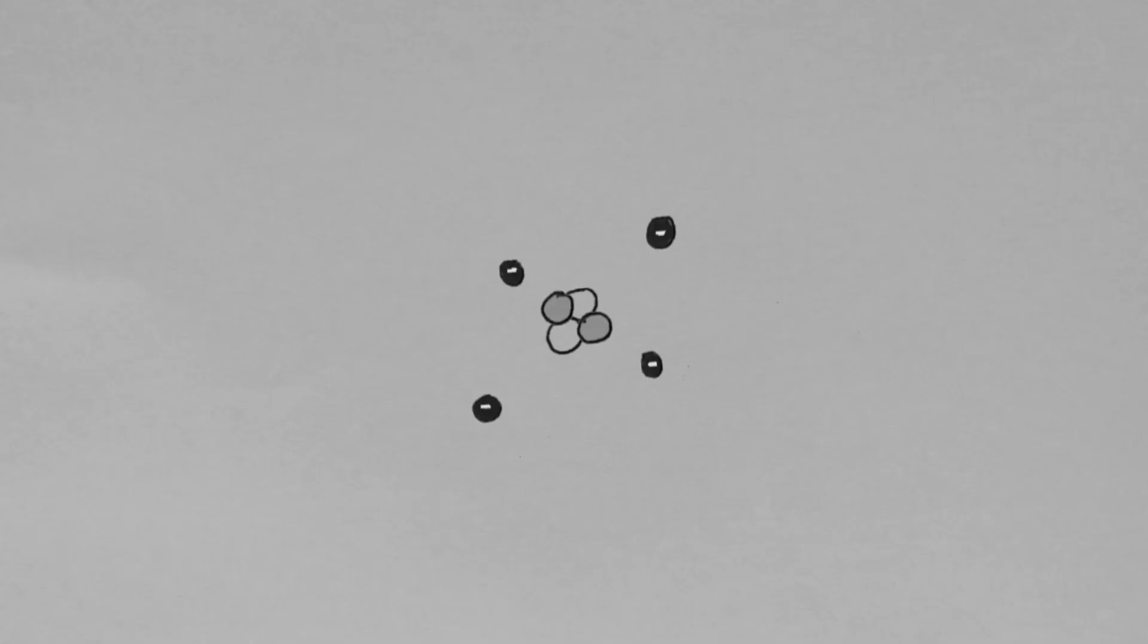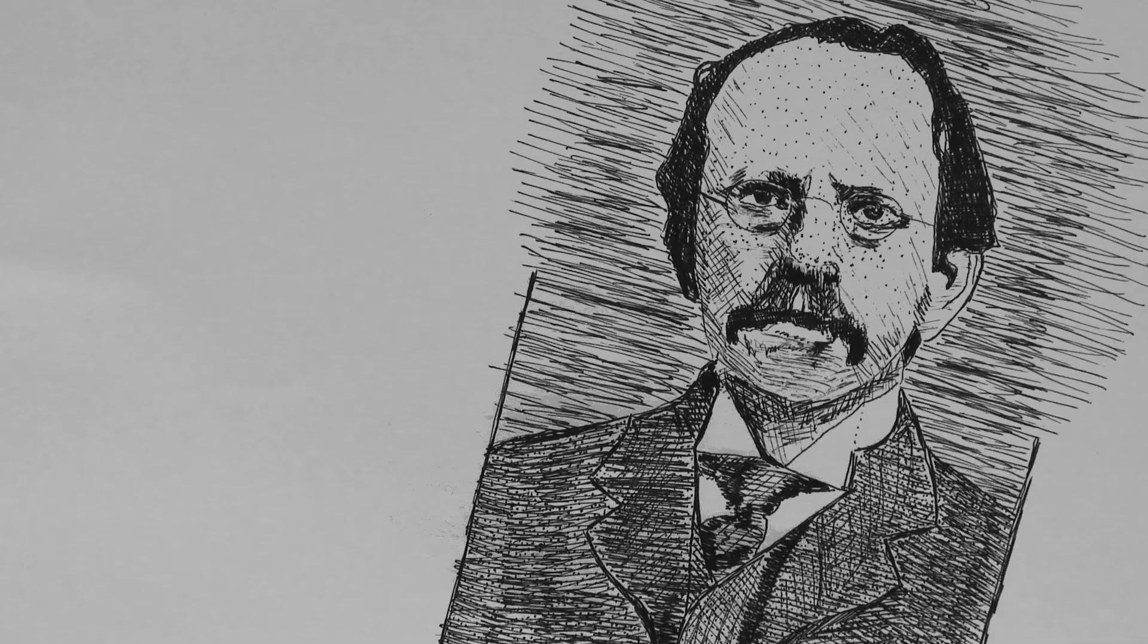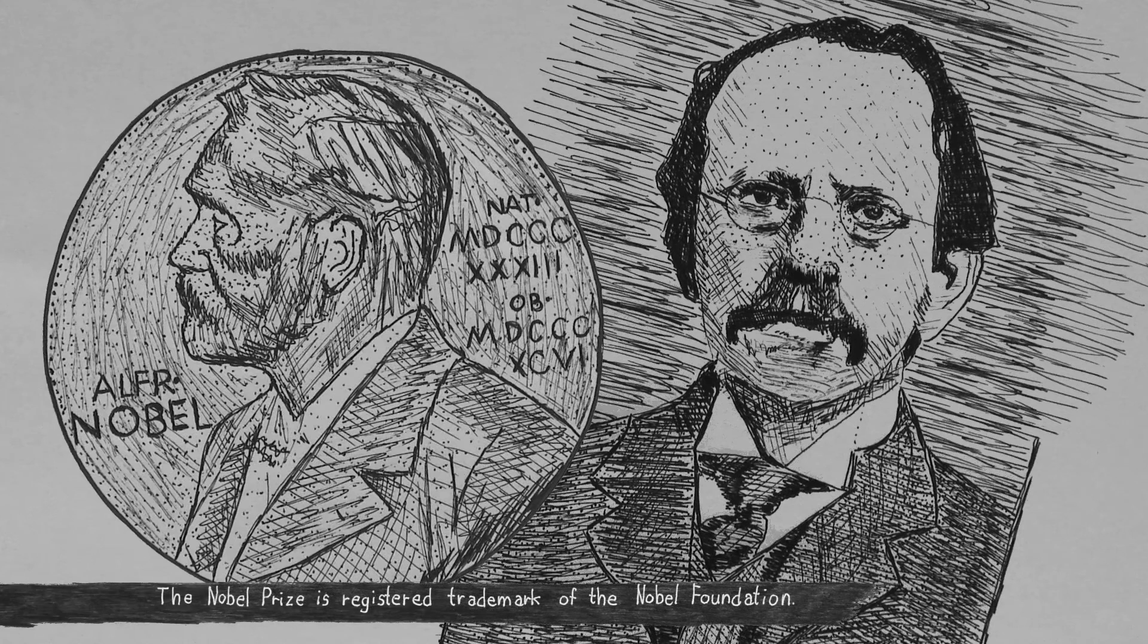The discovery of the electron being a negatively charged particle set a benchmark in atomic theory, because it meant there had to be a positive charge somewhere. Otherwise, the atom would collapse, and life as we know it wouldn't exist. This led to JJ Thompson winning the Nobel Prize in 1906.